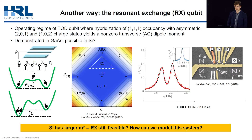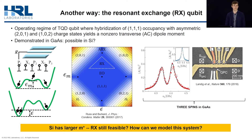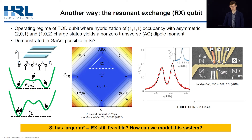However, silicon has a larger effective mass than gallium arsenide, so it's not obvious that this kind of conventional Rx operation will be robust in silicon. So to resolve these questions, we need some kind of a model of a silicon triple quantum dot.